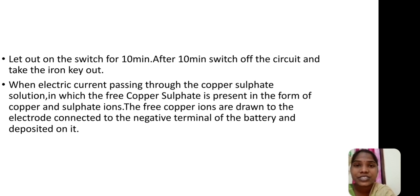Now, switch on the circuit for 10 minutes and after 10 minutes switch off the circuit and take the iron key out. When electric current passes through the copper sulfate solution in which the copper sulfate is present in the form of copper and sulfate ions, the free copper ions are drawn to the electrode connected to the negative terminal of the battery and deposited on it.